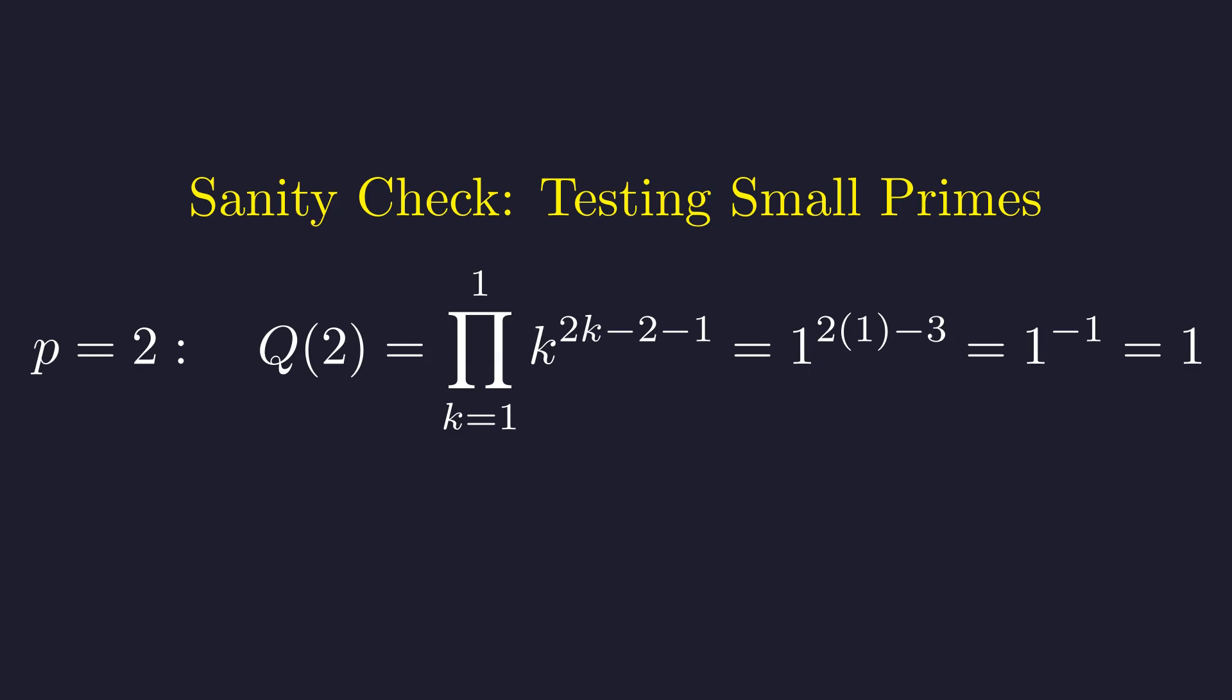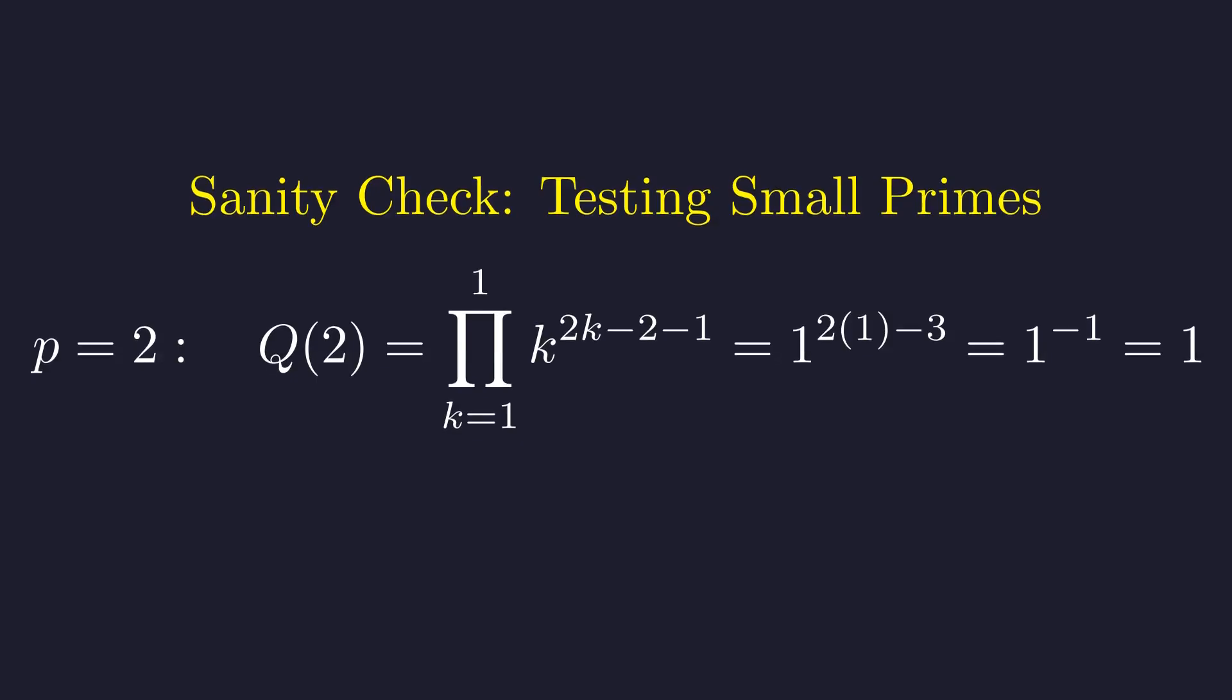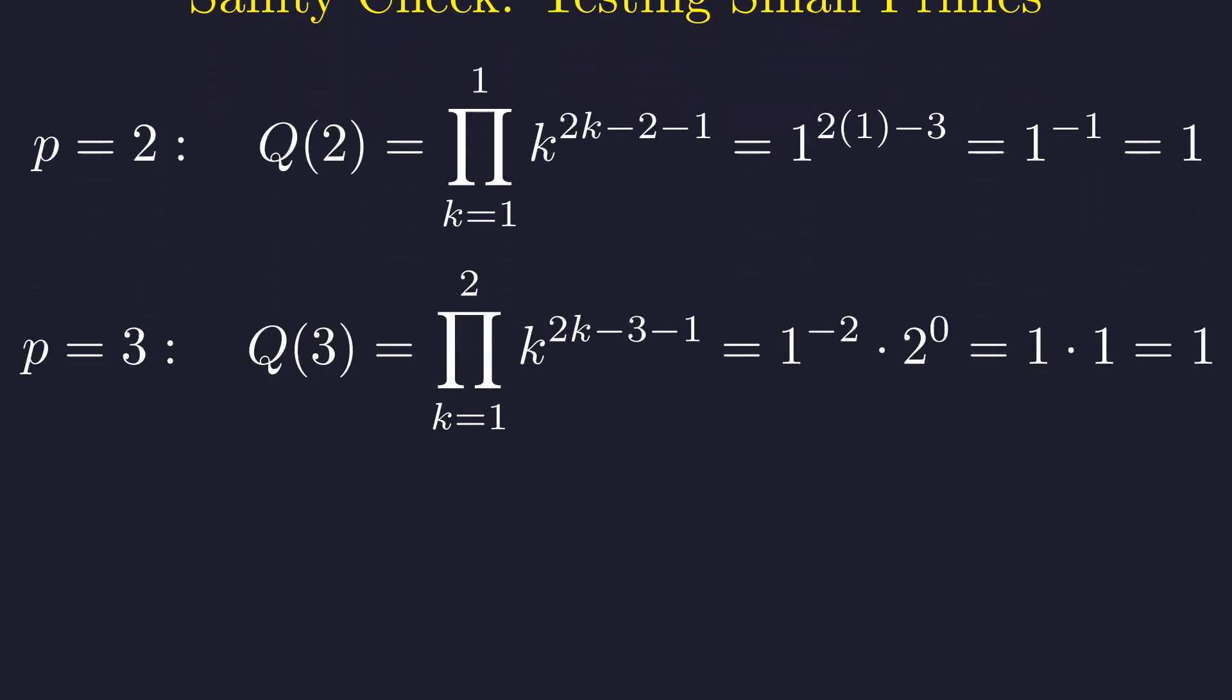Starting with p equals 2, we get the simplest possible case—just one term in our product. We're computing 1 to the power of negative 1, which is just 1. For p equals 3, things get slightly more interesting: we have 1 to the negative 2 times 2 to the zero, which becomes 1 times 1, which is 1.